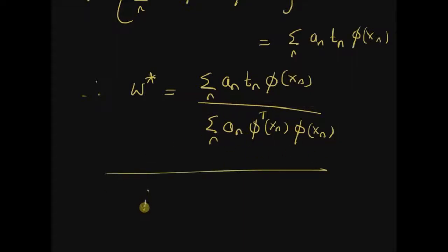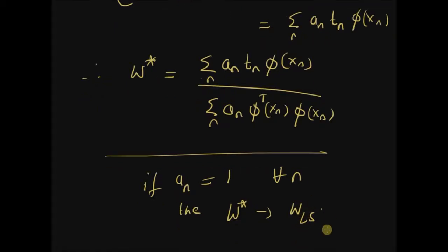And you can clearly see that if a_n's are equal to 1 for all n, then the optimal solution w* is same as the solutions for the least squares, that is the classical least squares solution. Thanks for watching.